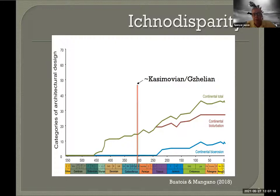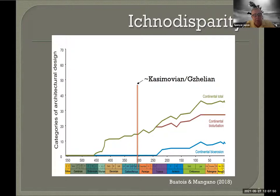Perhaps what's more interesting is looking at ichno-disparity — the differences between body types — but even that is tricky. As Matt showed, we can have the same trace made by rather different animals. Diplichnites, generally thought of as the walking trace of a millipede or myriapod, can also be made by cockroaches and other arthropods, or appear as an undertrack from something as disparate as a horseshoe crab, a limulet. The ichno-data for invertebrates are hard to interpret because they don't really correspond to taxa.